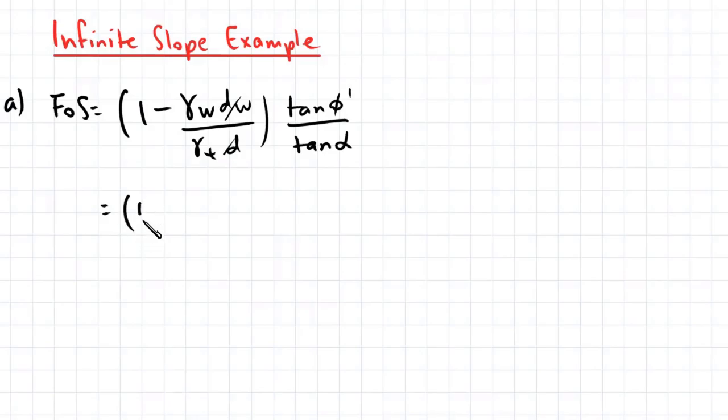So that's equal to 1 minus 9.81 divided by gamma t, which is 20, which we've assumed to be the same as gamma saturated, and this is multiplied by tan 28 degrees divided by tan 12 degrees. And this gives us a factor of safety of 1.27.